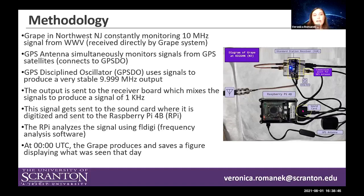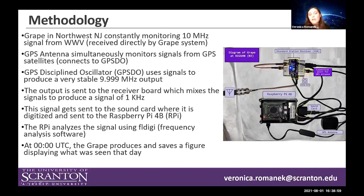The 9.99 MHz output is sent to the receiver board, where it mixes the signal to produce a signal of one kilohertz. This signal is sent as an analog signal to the sound card where it's digitized, then sent to the Raspberry Pi 4B, which analyzes the signal using FL Digi frequency analysis software. At zero UTC each day, the GRAPE produces and saves a figure displaying what was seen that day.